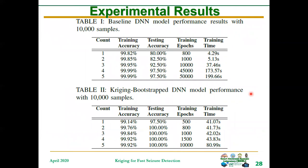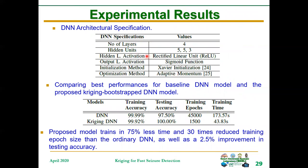These are the results obtained. For the baseline DNN, to achieve a testing accuracy of 97.5%, you have to train for about 200 seconds using 50,000 epochs. With our proposed Kriging-Bootstrap DNN model, you only need to train for about 81 seconds to obtain 100% accuracy, achieved in just 10,000 epochs. Comparing the best performance of baseline DNN with our proposed model, our method trains in 75% less time, with 30 times reduced epochs, and a 2.5% improvement in testing accuracy.